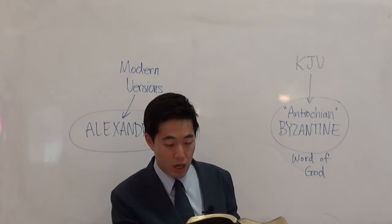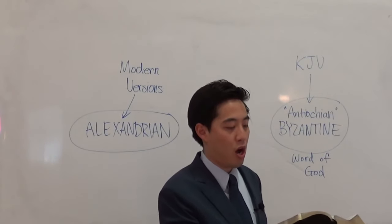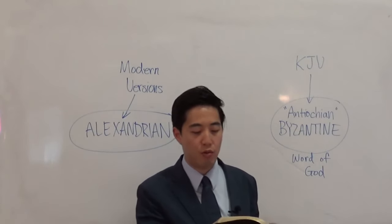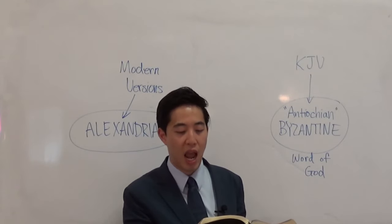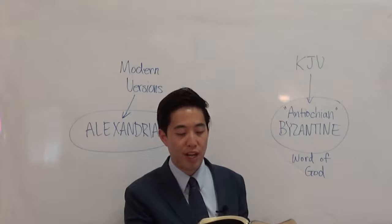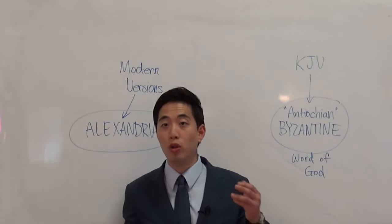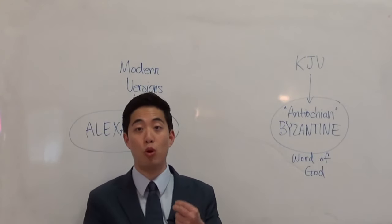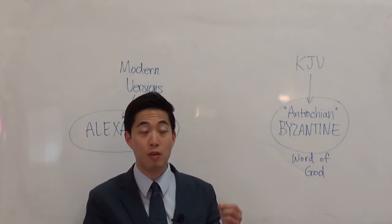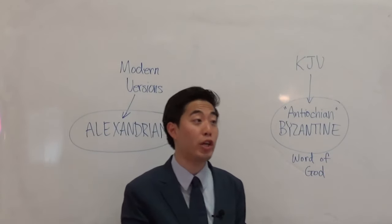Verse 19 says those scattered abroad upon the persecution that arose about Stephen traveled as far as Phenice, Cyprus, and Antioch, preaching the word. So the Bible gives a clue: if you want the closest area for the Word of God, it's going to be located in Antioch. That's where they were first called Christians.